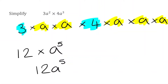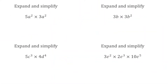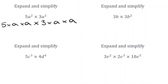Let's look at some final questions — feel free to pause and have a go. For the first one we have 5a squared multiplied by 3a squared. 5a squared is 5 multiplied by a multiplied by a, and 3a squared is 3 multiplied by a multiplied by a. Collecting the terms: 5 multiplied by 3 is 15. For the a's: a times a times a times a — that's a to the power of 4. The final answer is 15a to the power of 4.